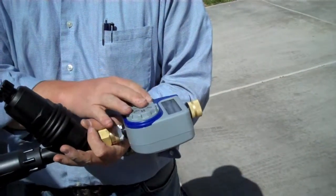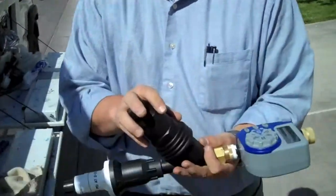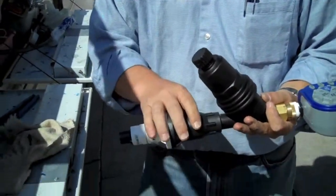So, to summarize, this is the battery-operated timer, this is the Y-strainer, and this is the pressure regulator.